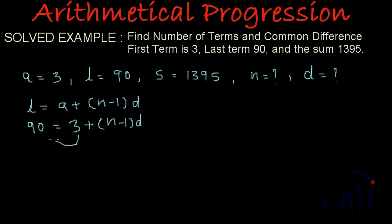And if I take this 3 to this side, it will become minus 3, and then we will get (n minus 1)d is equal to 90 minus 3, that is equal to 87. Or if I multiply this d inside the bracket, we will get nd minus d is equal to 87. Let's call this as equation number 1.